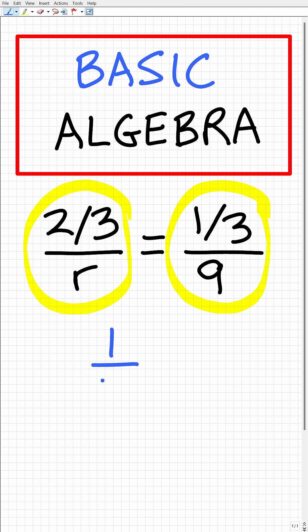So for example, if we have one fraction, one-half, and it's equal to another fraction, let's say 5 over 10, in mathematics this is called a proportion, i.e. one fraction that is equal to another fraction.